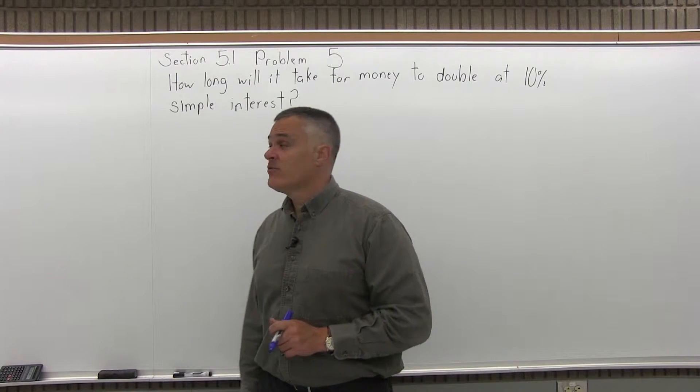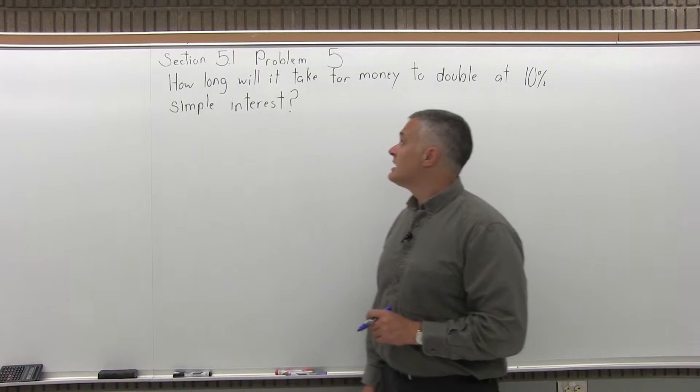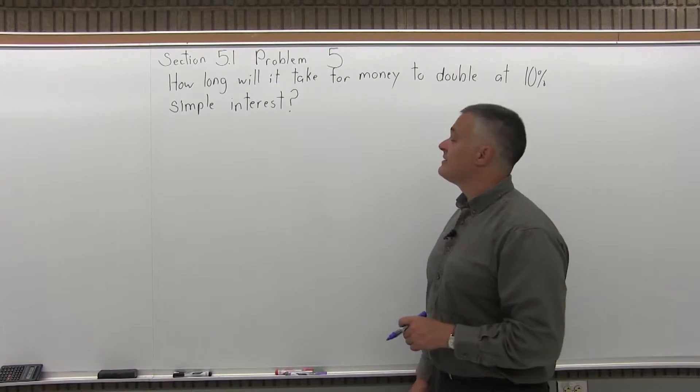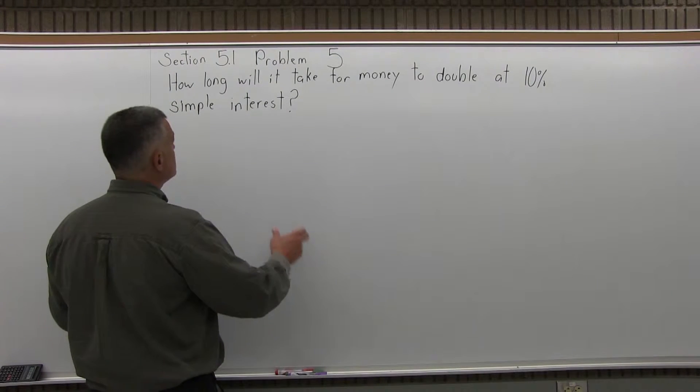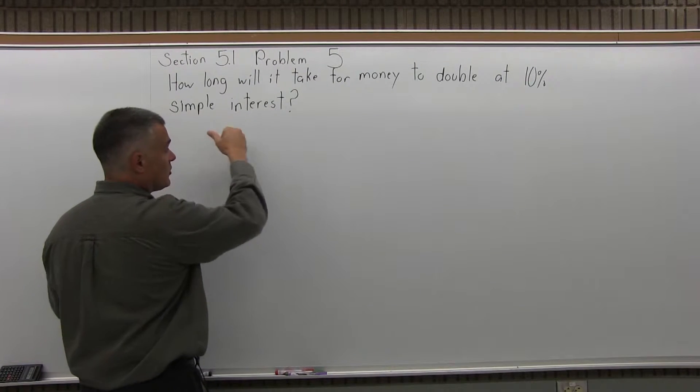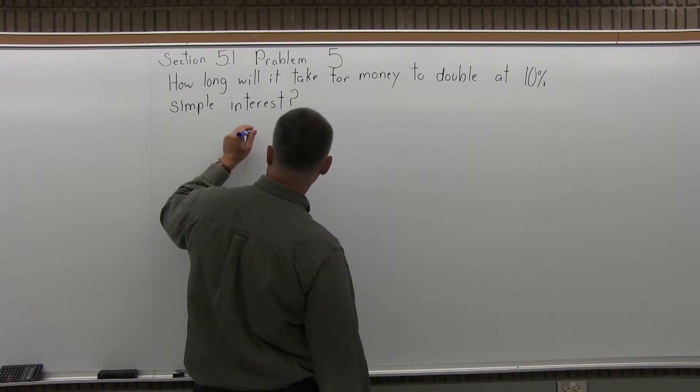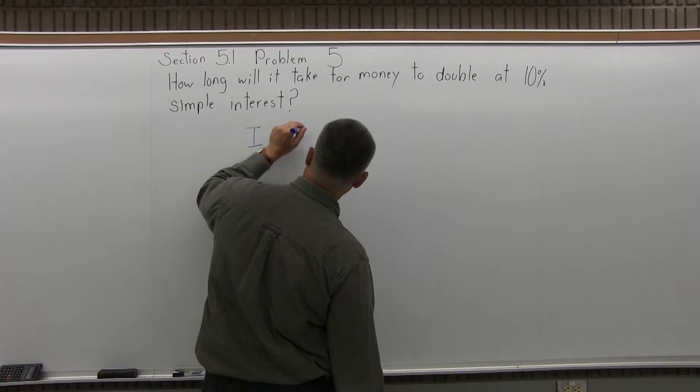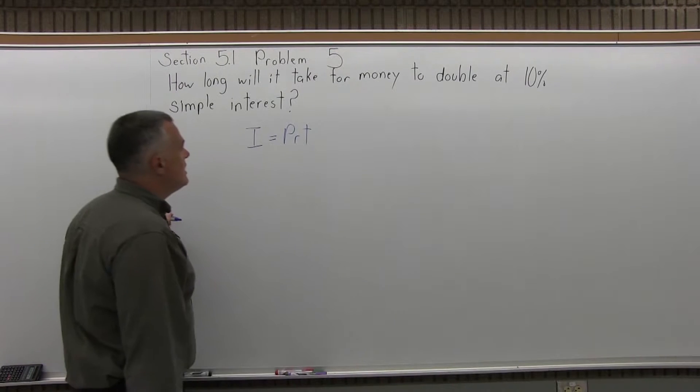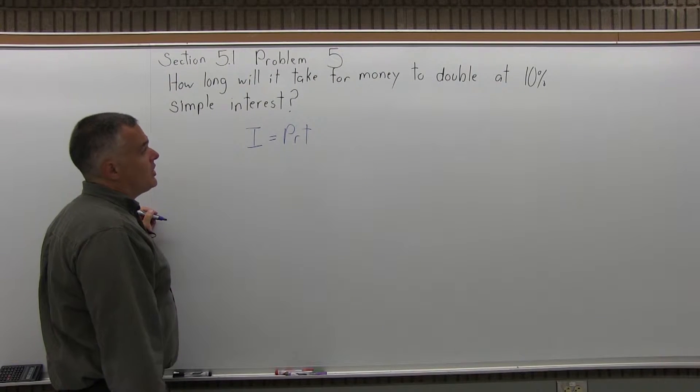This is Section 5.1, Problem 5. It says, how long will it take for money to double at 10% simple interest? So again, because the problem says simple interest, I'm going to use the simple interest formula as opposed to the compound interest formula. So I have I equals PRT, and the unknown is the T. How long will it take?